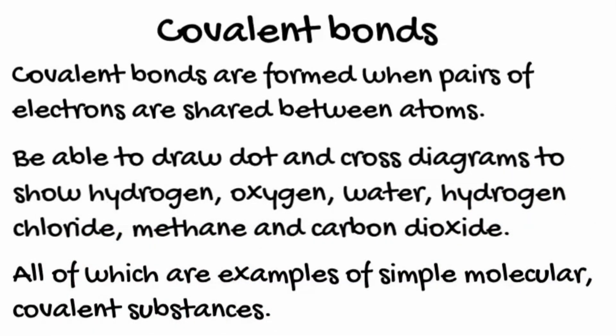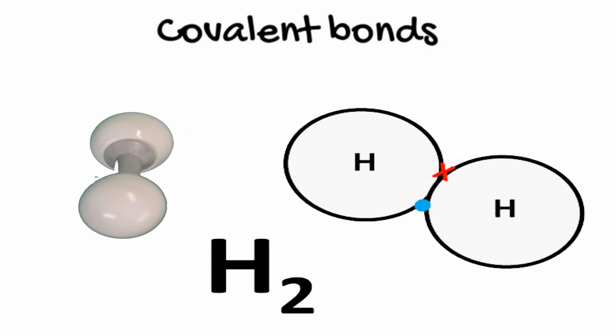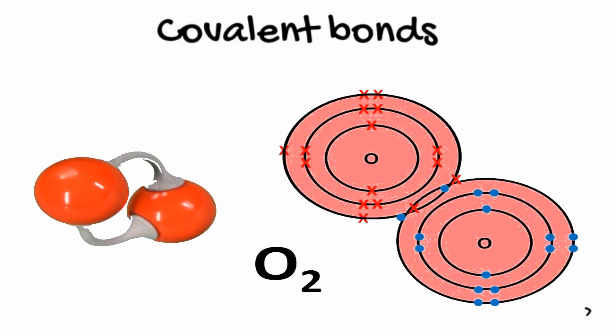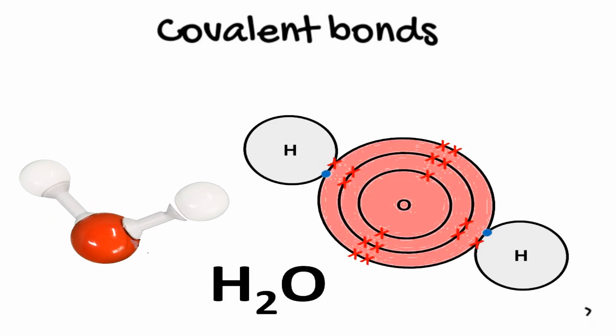Here we have representations of these simple molecular substances. Starting with hydrogen, H2, one electron shared from each of the atoms. Oxygen, O2, has two pairs of electrons, a double bond. H2O, or water.